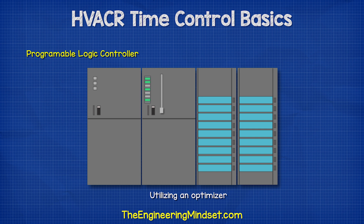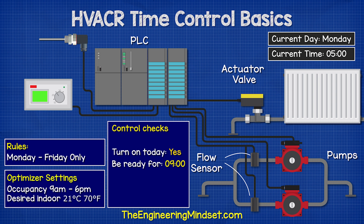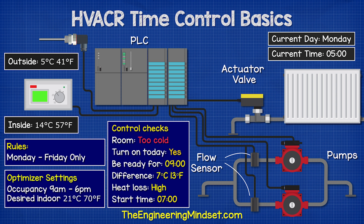A more sophisticated system, typically used in much larger buildings, will use an optimizer. For this example, we have it connected to a programmable logic controller. This will check with the clock: should the heating turn on today, and if so, at what time will the building be occupied? The clock replies yes — the scheduled occupancy time is 9am. The PLC checks the current room temperature and calculates the difference between this and the desired temperature. It then checks the outdoor temperature to calculate how long it will take to heat the building, because on a cold day it will take longer, so it will need to start earlier.